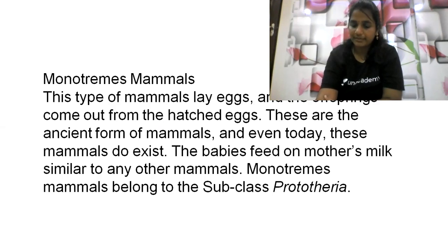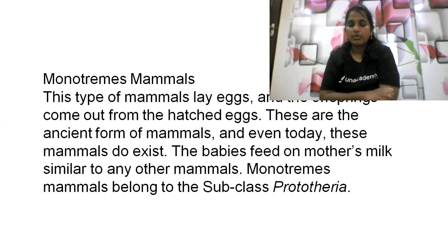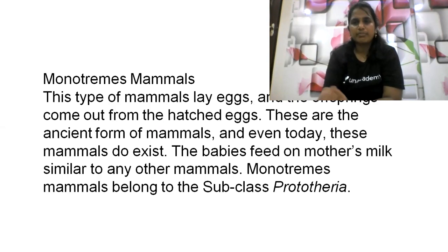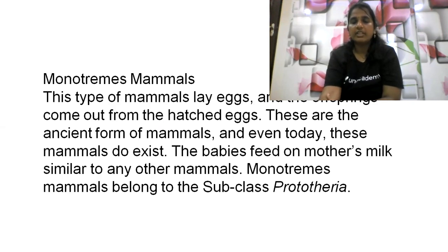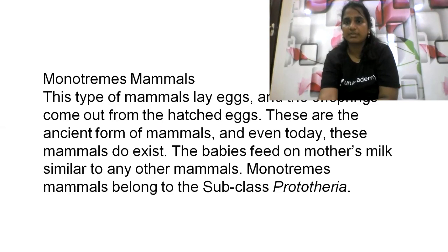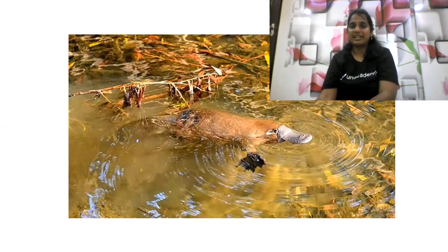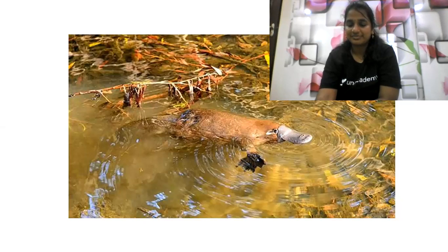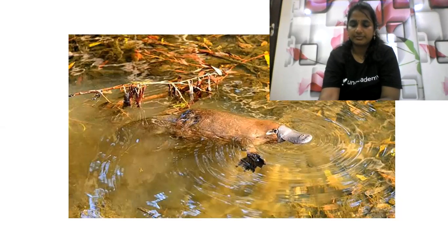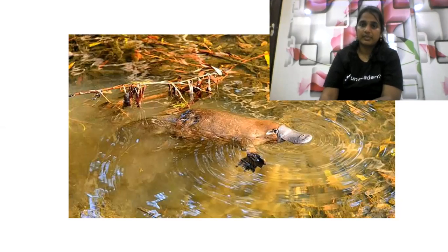Monotremes are also notable for being poisonous — they have a posterior orifice. They have a lower metabolic rate, which is why the organisms are slow. These are prehistoric monotremes. The duck-billed platypus is a Cretaceous monotreme, and they are found in regions including South America.